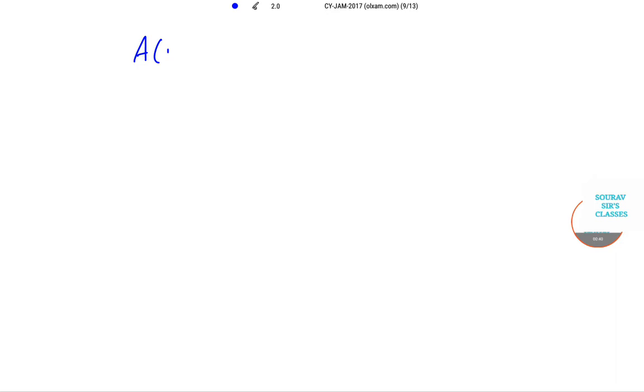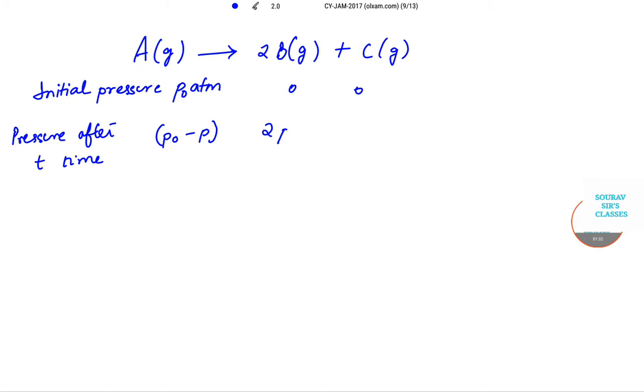What I'll do first is I'll rewrite the reaction. So it is A(g) goes to 2B(g) plus C(g). Now let us write the initial pressure. This becomes P0 atmospheres, 0 and 0. So pressure after T time, let me write it below so it will be more convenient. Pressure after T time will be given by for this it is P naught minus P, this is 2P ATM and for this it is P ATM.